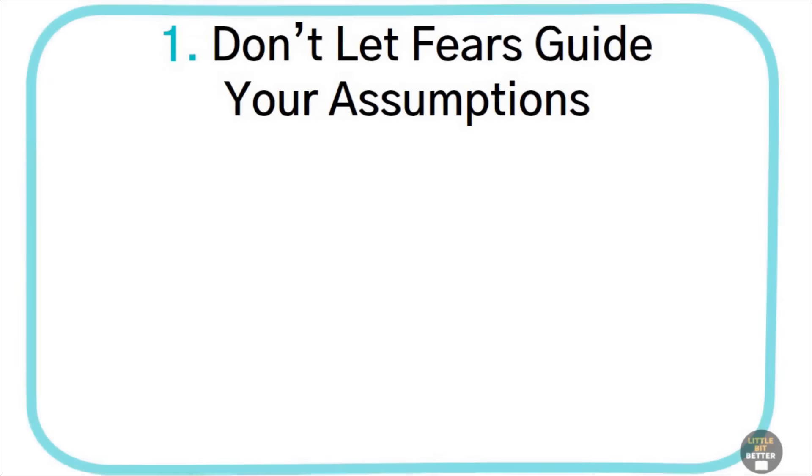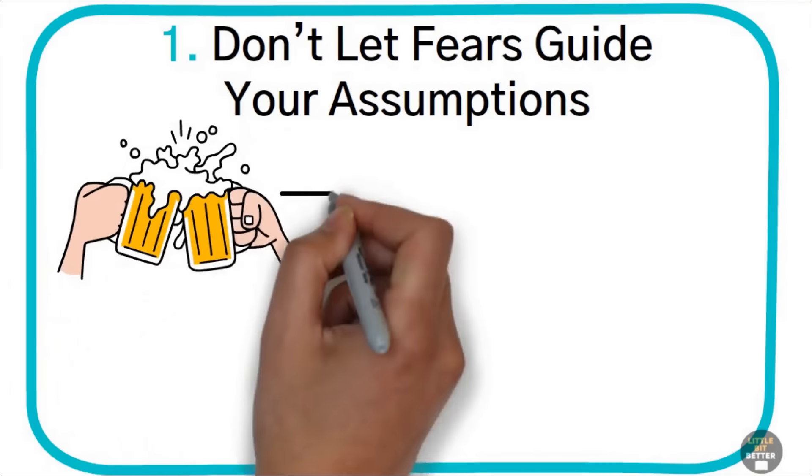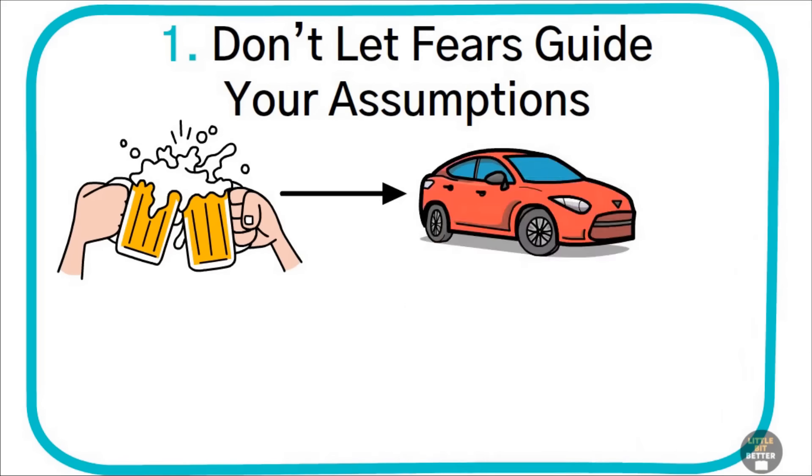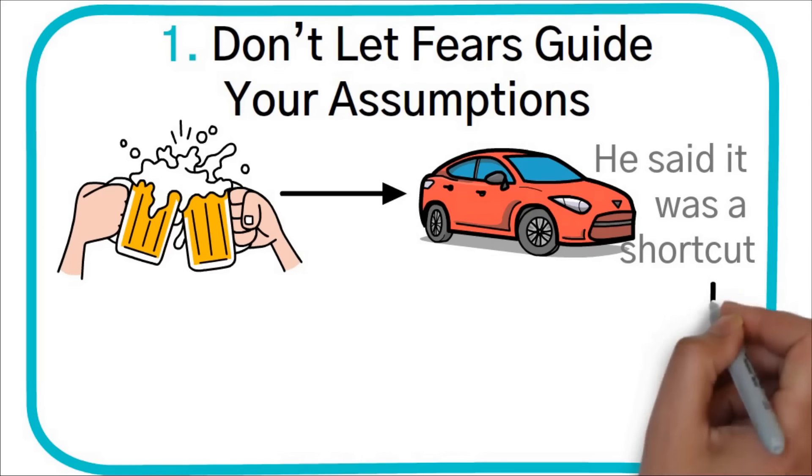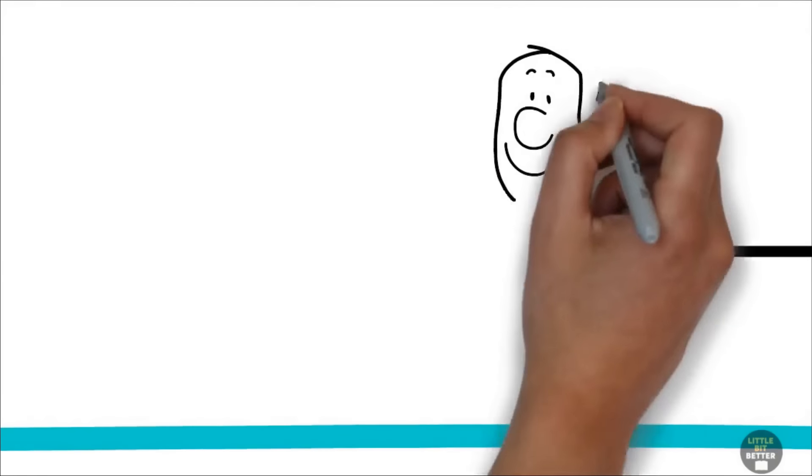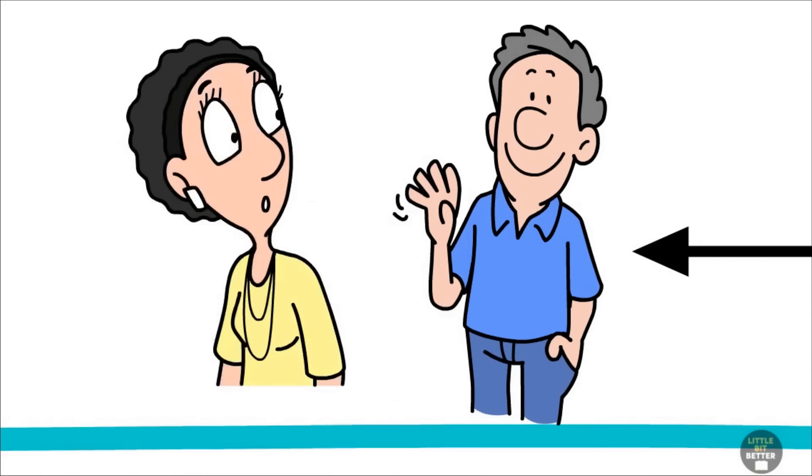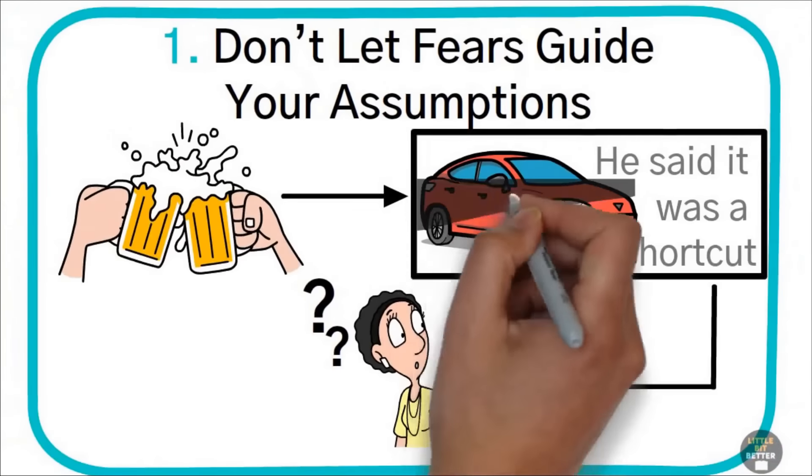For instance, they met in a bar where he offered her a ride home. He took her down unfamiliar streets. He said it was a shortcut. He got her home so fast, she caught the 10 o'clock news. Why is the ending so surprising? Well, we made an assumption based on our fears. It is all too easy to fall into the habit of putting the worst interpretation on what the other side says or does.